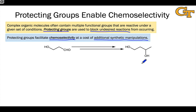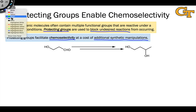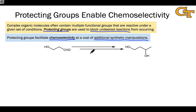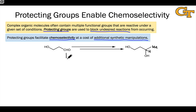Protecting groups are not exactly a green approach to organic synthesis, but they turn out to be very important. To make our discussion more concrete, consider this example where what we'd like to do synthetically is, in essence, nucleophilic addition of a methyl group to the carbonyl carbon of the aldehyde in our starting material. Based on the structural change that happens, it becomes apparent that we can do this using some kind of methyl-metal reagent, something like an organolithium or Grignard reagent.